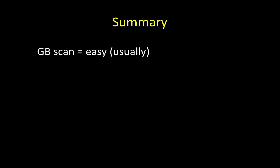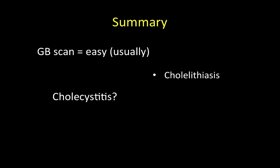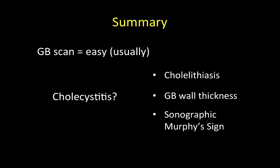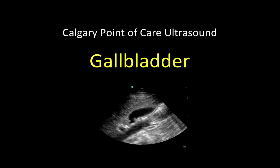In summary, assessment of the gallbladder with point of care ultrasound is relatively straightforward. Gallbladder stones are usually easily identified, which in the right setting allows clinicians to make the diagnosis of biliary colic and forego formal ultrasound exams at increased cost and time in the emergency department. Identifying acute cholecystitis requires the identification of any combination of cholelithiasis, gallbladder wall thickening, sonographic Murphy sign, and pericolecystic fluid. That concludes this short introduction to point of care gallbladder ultrasound. Good luck and happy scanning!